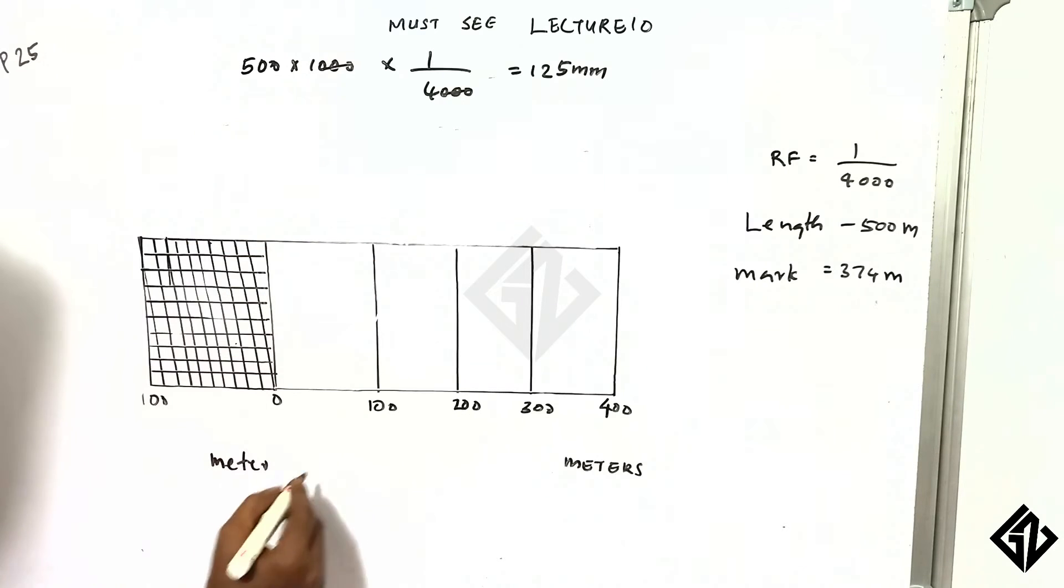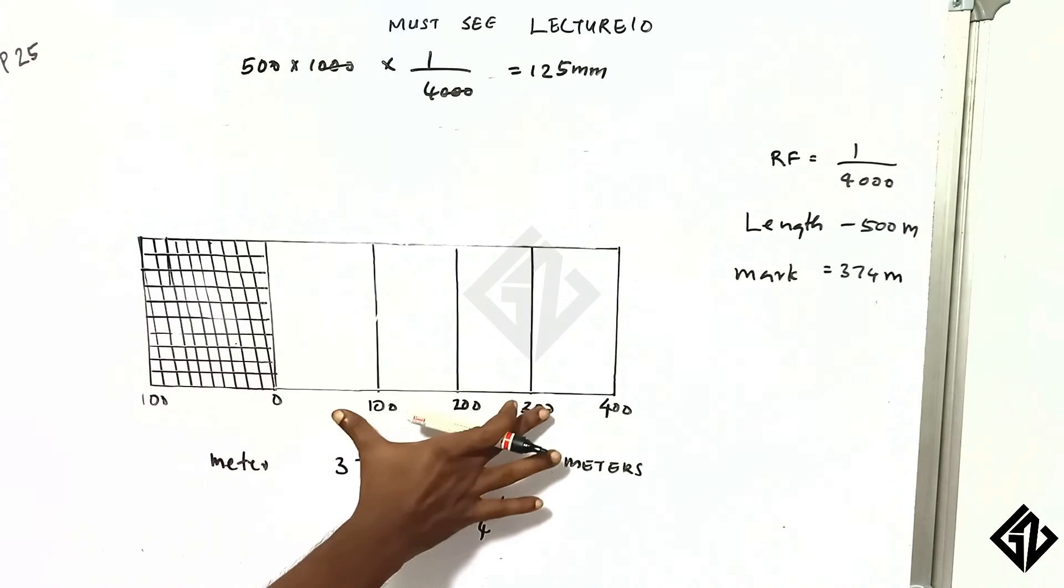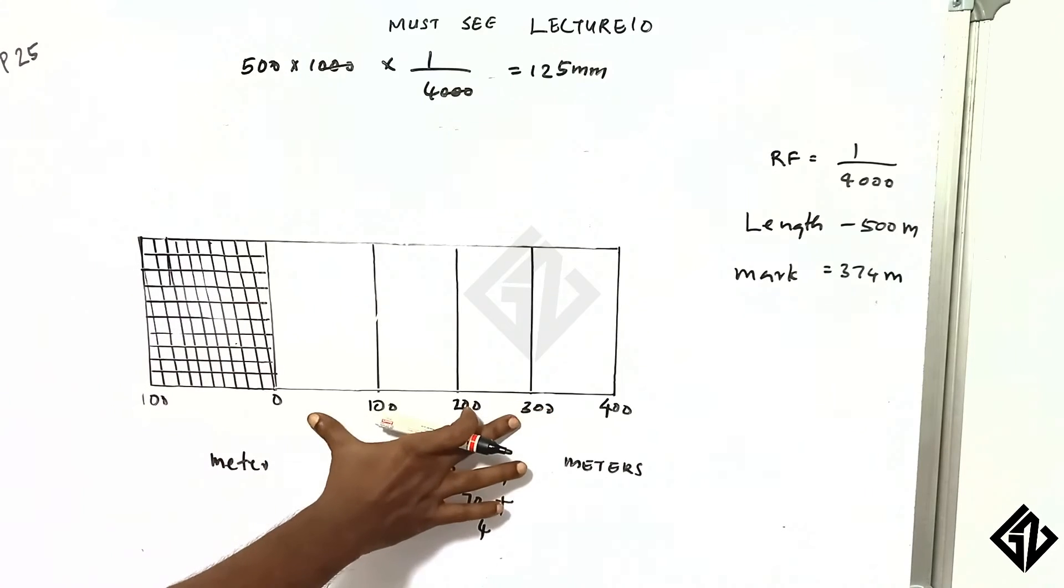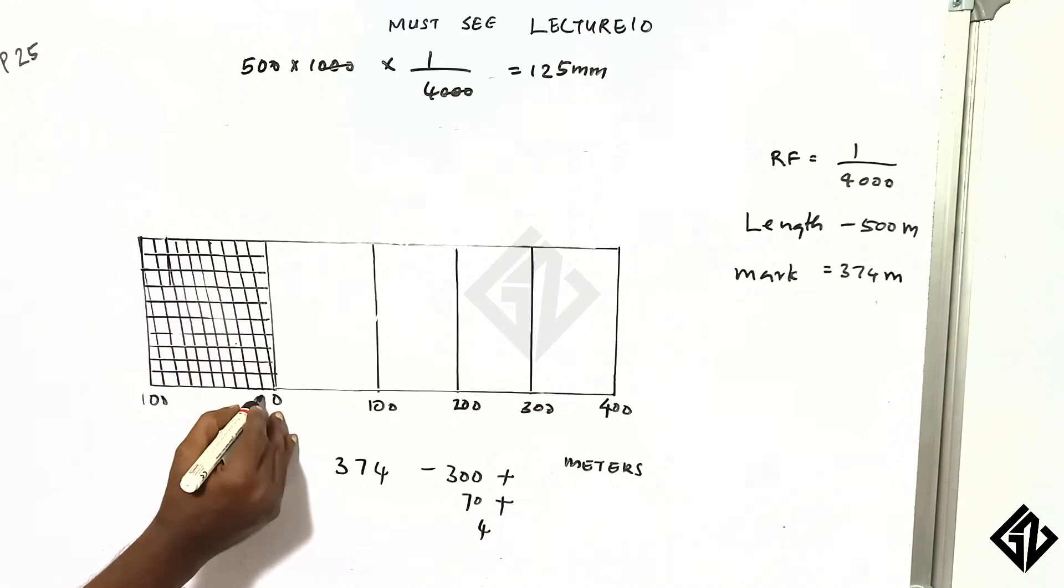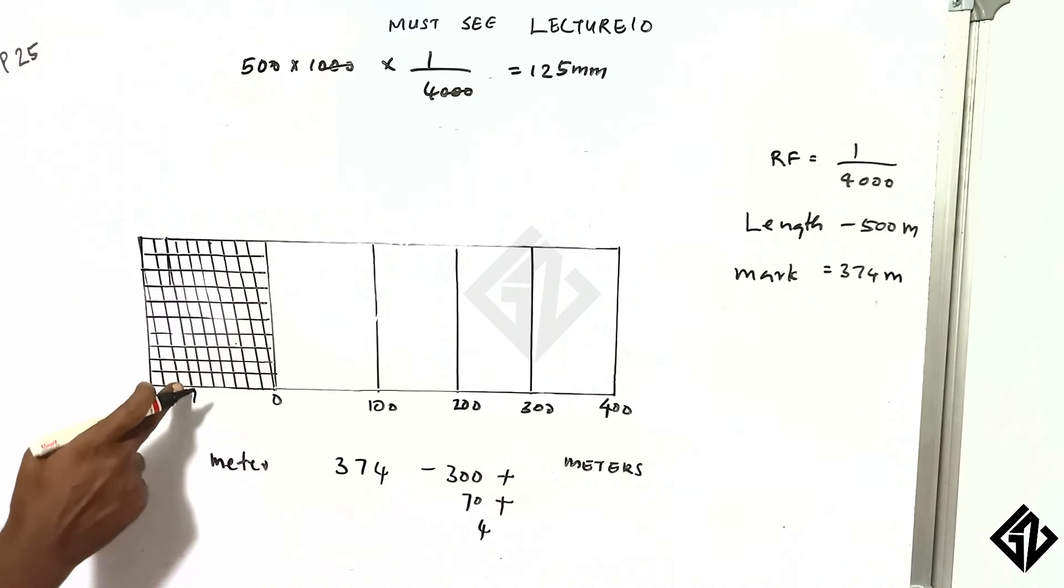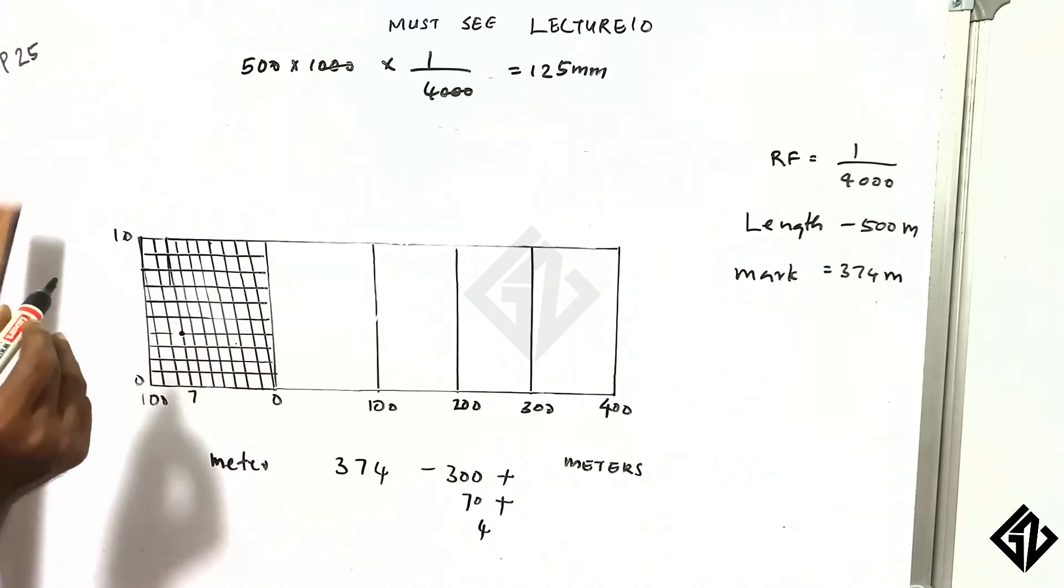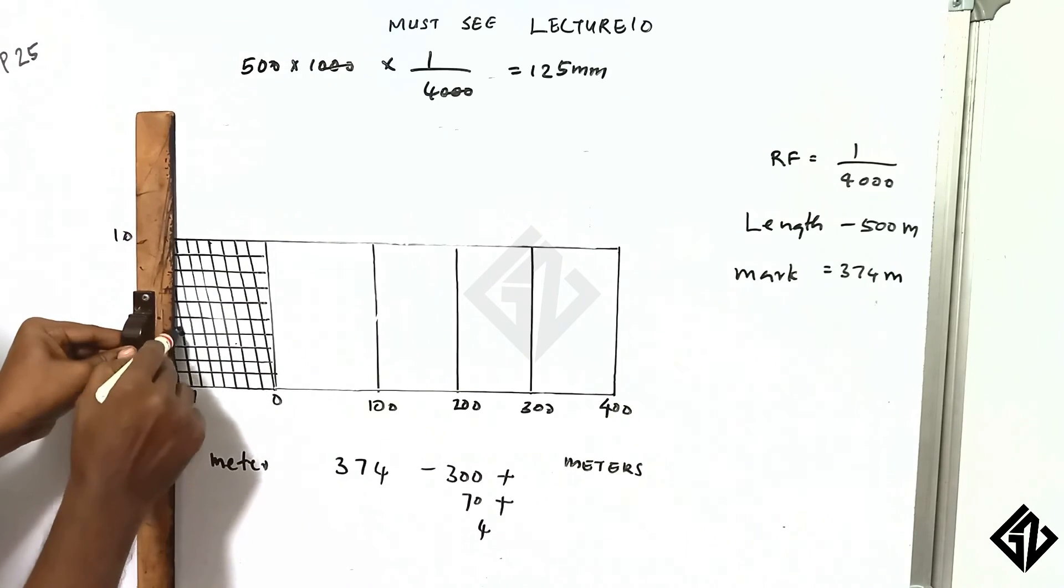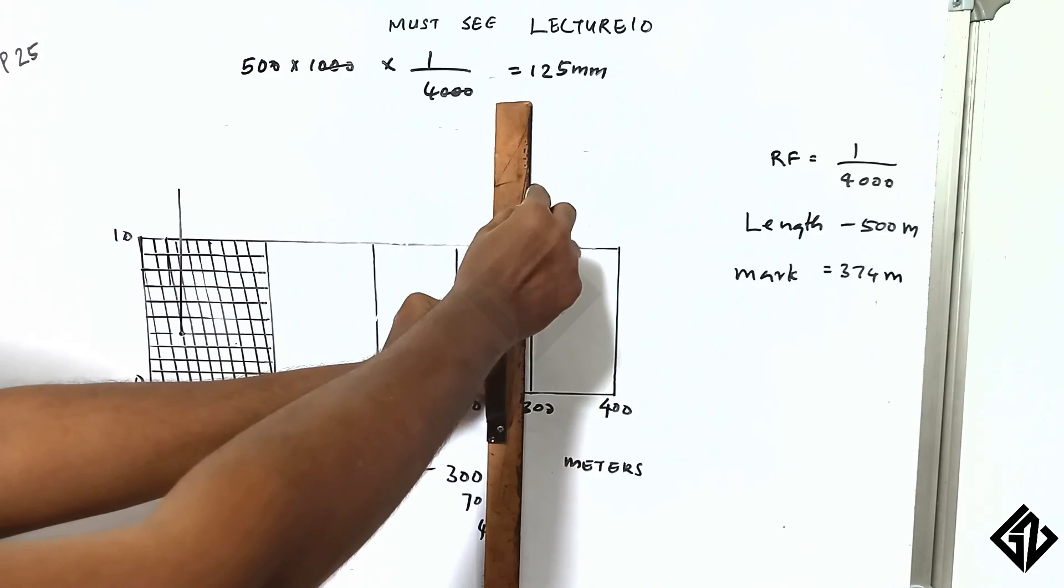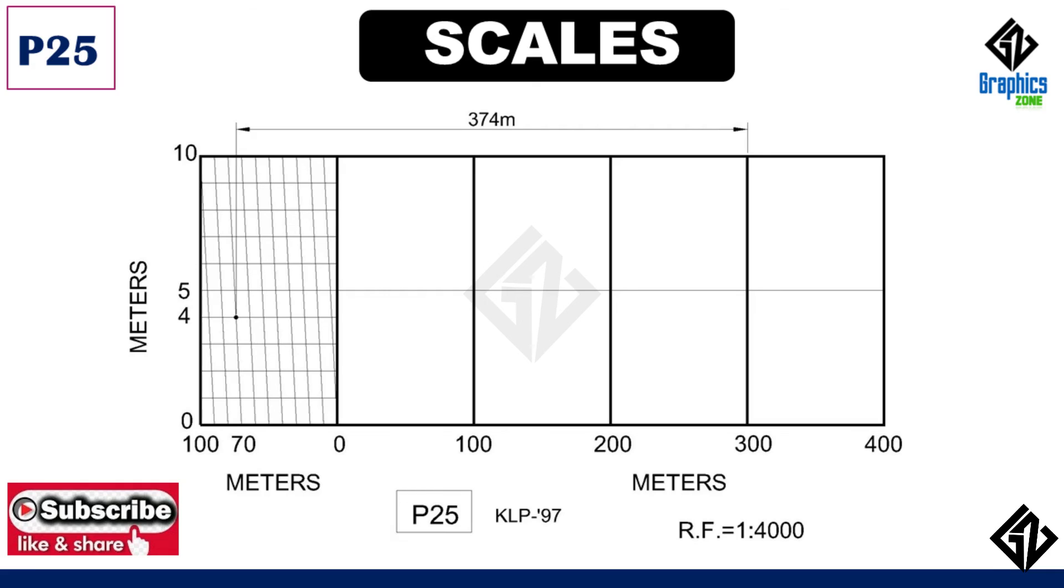Now, we have 374. I have 300 plus 70 plus 4. Then we have 3 divisions here, 7 divisions here. So this is 374 meters.